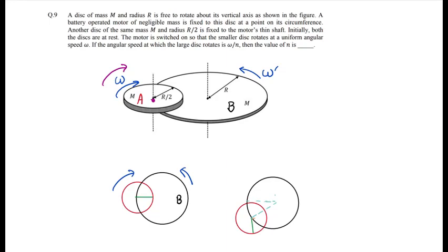What is the angular speed of the larger disc? What is the angular speed of B? The angular speed omega of the motor is with respect to disc B. The motor is fixed to disc B. This means the angular velocity is with respect to disc B.